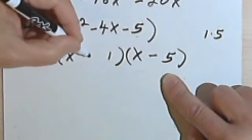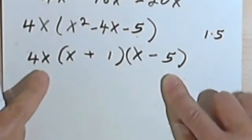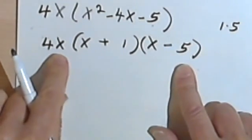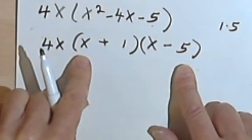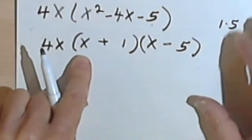So this becomes a negative 5, this becomes a positive 1. And this should be my solution, 4x times x plus 1 times x minus 5. Let's check that and make sure it's right.